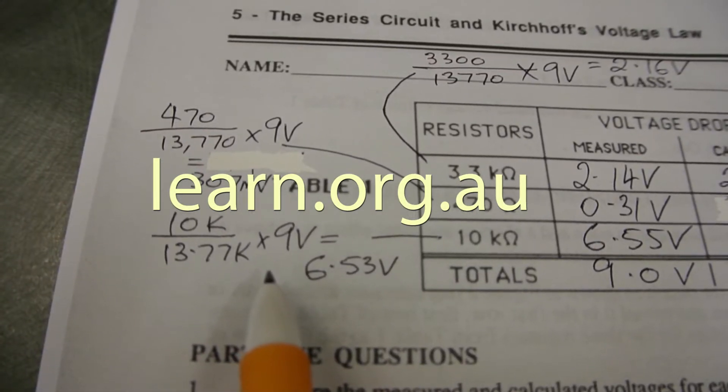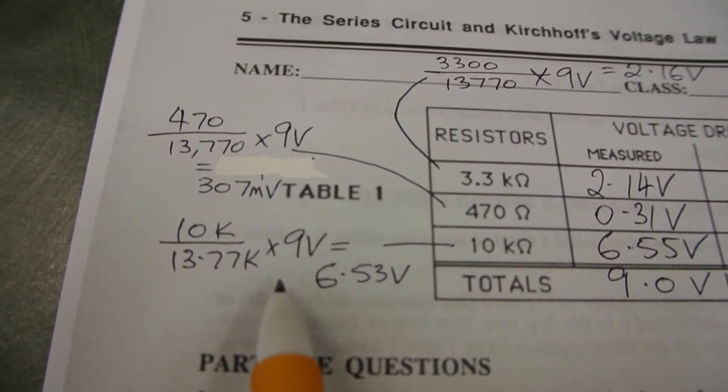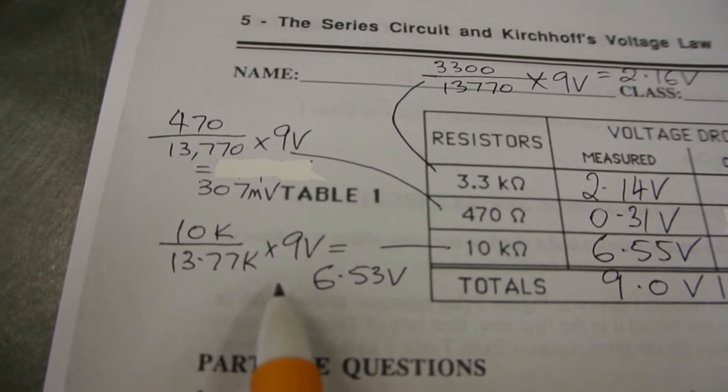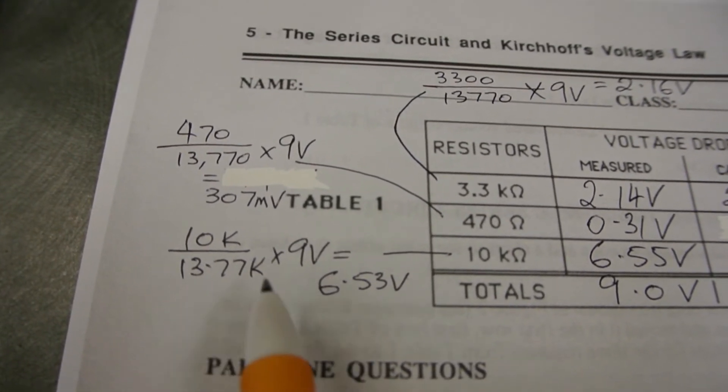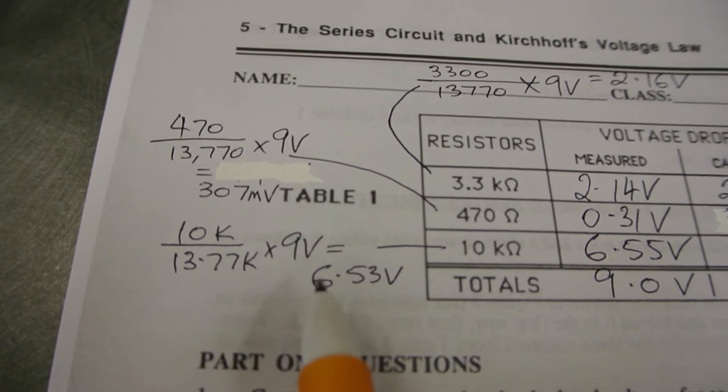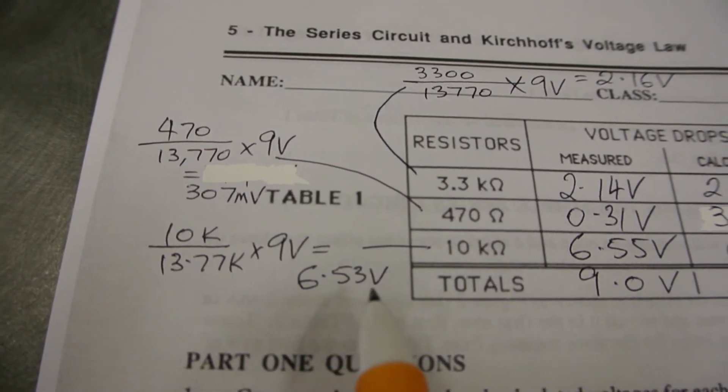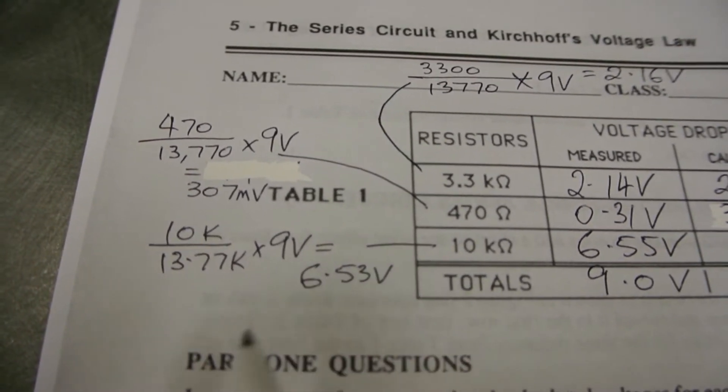You can see here, doing the calculations as per the recommendation in the laboratory. The individual resistance divided by the total resistance times the total voltage to come up with the voltage across that individual resistor.